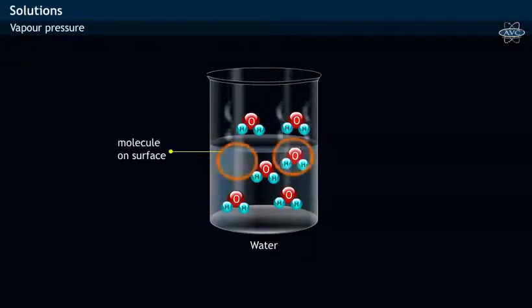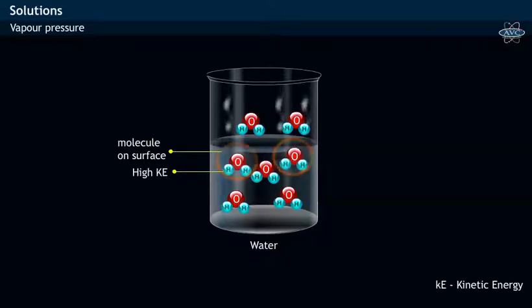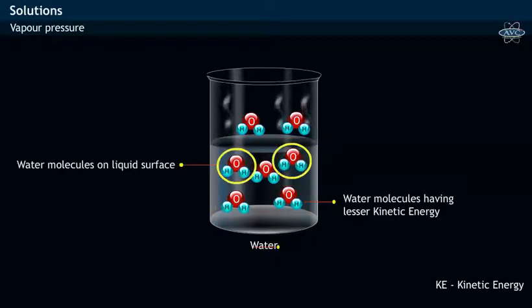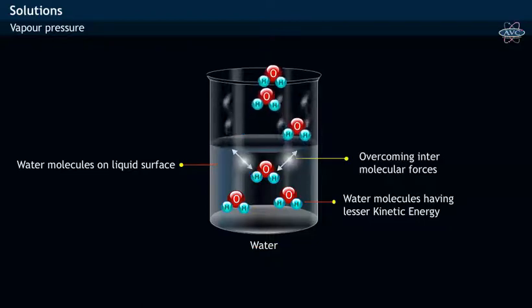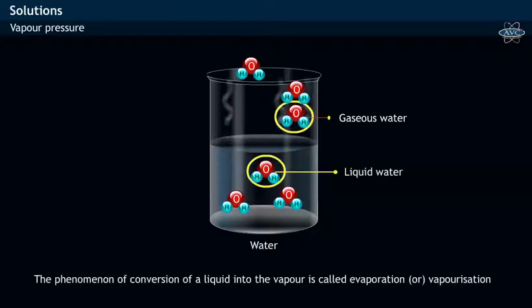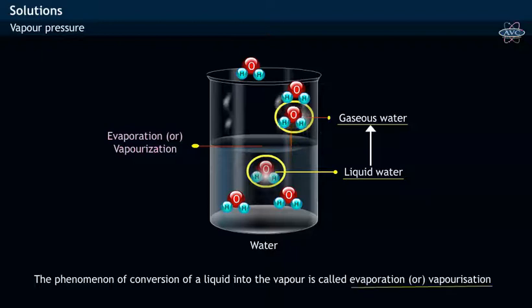Water molecules on the liquid surface move rapidly and have higher kinetic energies compared to water molecules inside the liquid. The molecules on the liquid surface with greater kinetic energy escape into space by overcoming intermolecular forces of attraction. This phenomenon of conversion of liquid into vapour state is called evaporation or vaporization.